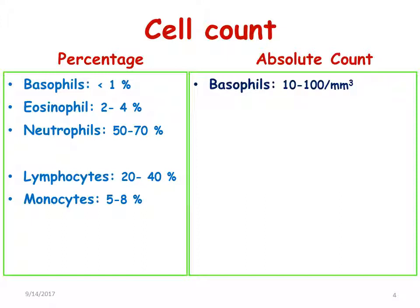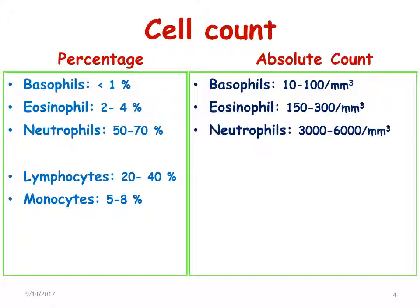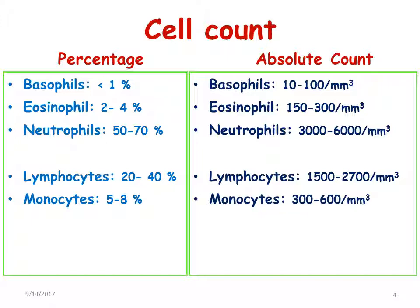Looking at the absolute counts: basophils amount to 10 to 100 per cubic millimeter of blood; eosinophils 150 to 300 per millimeter cube; neutrophils 3,000 to 6,000 per millimeter cube; lymphocytes 1,500 to 2,700 per millimeter cube; and monocytes 300 to 600 per millimeter cube.